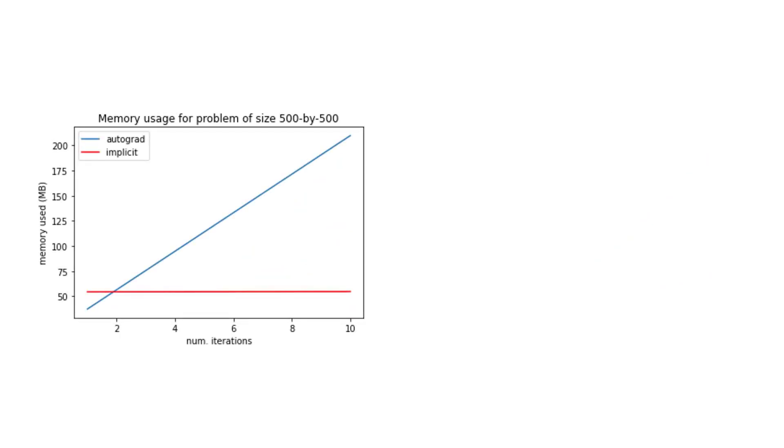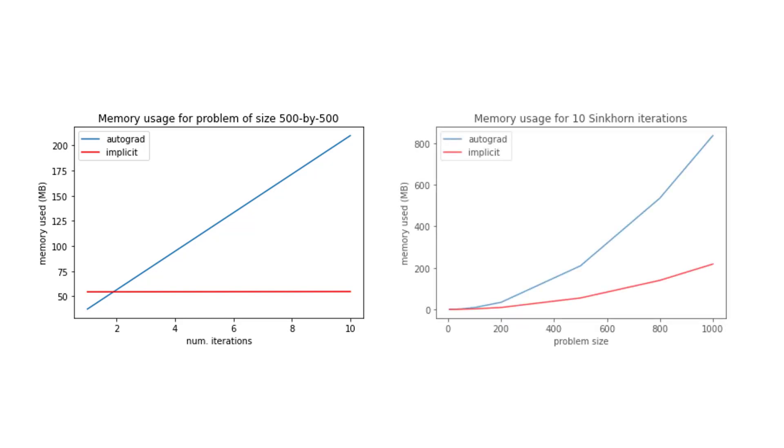More impressively, the implicit differentiation method does not require storing intermediate calculations in the forward pass, making it much more memory efficient in addition to being slightly faster. Here we show memory used for a single forward and backward pass as a function of the number of sinkhorn iterations and a function of problem size for fixed number 10 of sinkhorn iterations. Our hard work has been worth it.